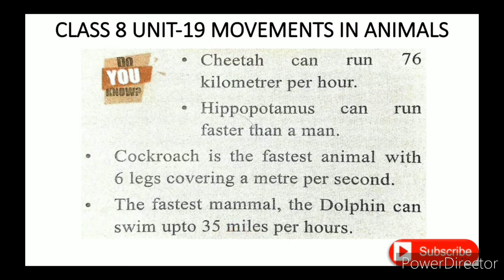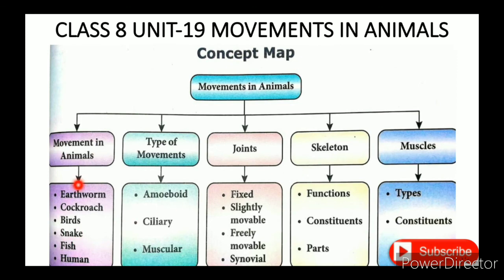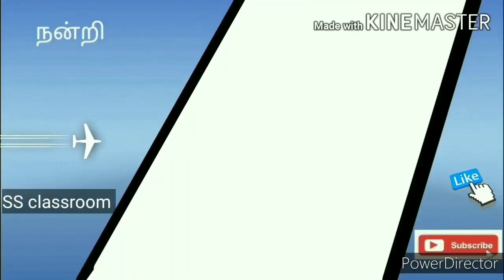In this video, we saw the movement in animals — snake, fish, and human movement. Snake movement uses loops. Fish movement uses fins, and the body is streamlined and sharp. Human movement involves bones and muscles. In our next video, we will see types of movements. Thank you, student.